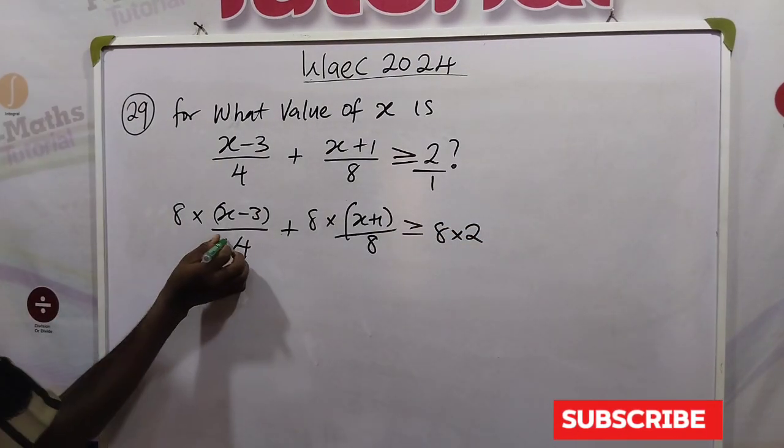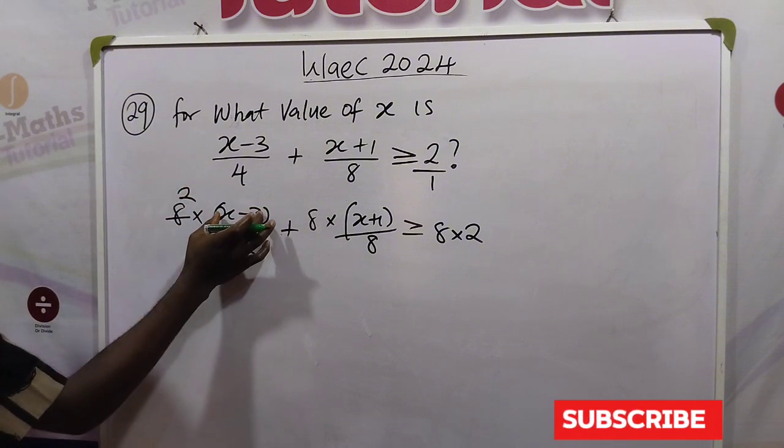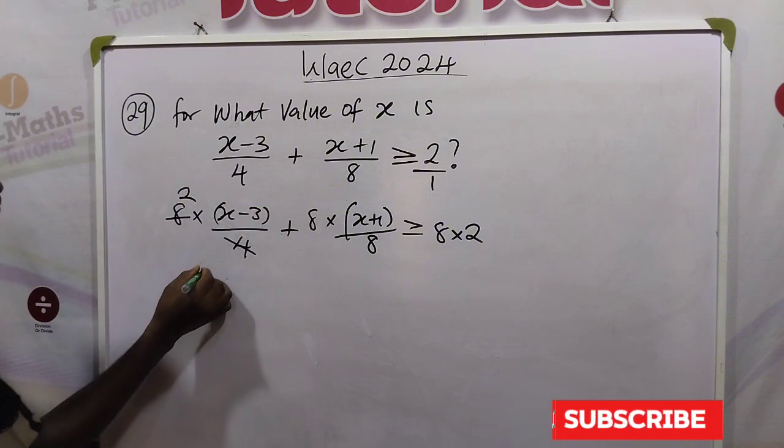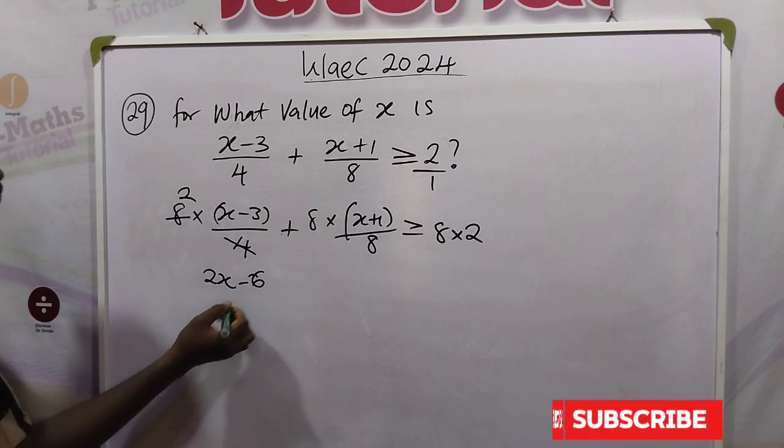Then let's simplify. 4 divides 8, 2. Then use these 2 and multiply the bracket. 2 times x is 2x, 2 times 3 minus 6 plus.